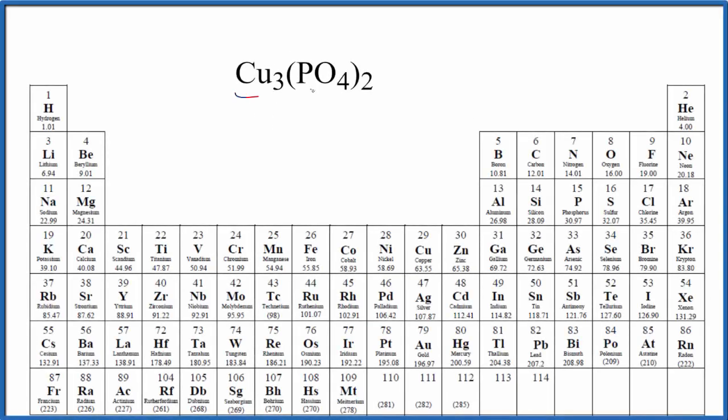To find the molar mass for copper phosphate we'll go to the periodic table and find the masses for each of the elements and then we'll add them up.